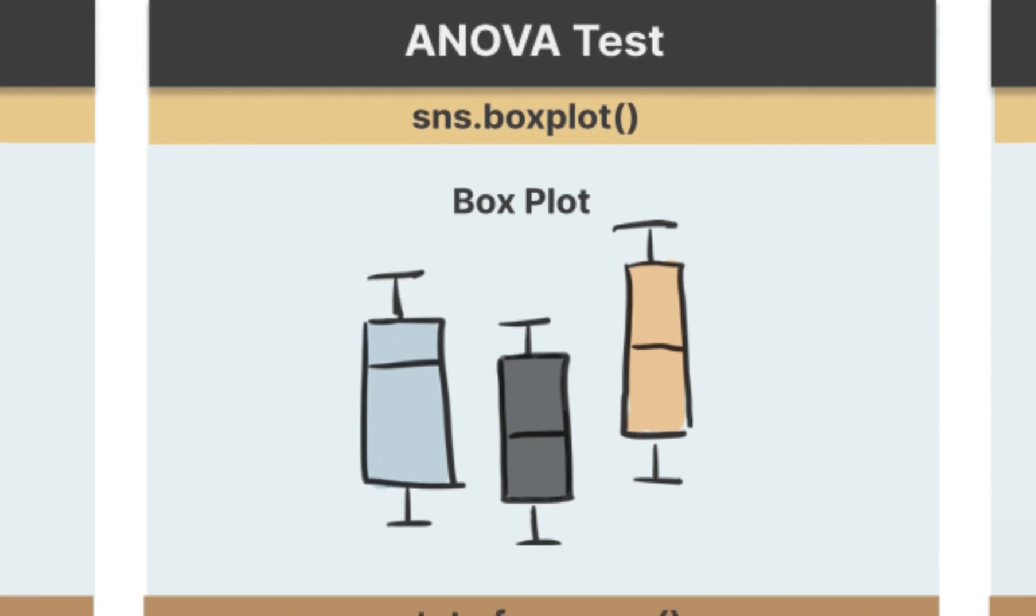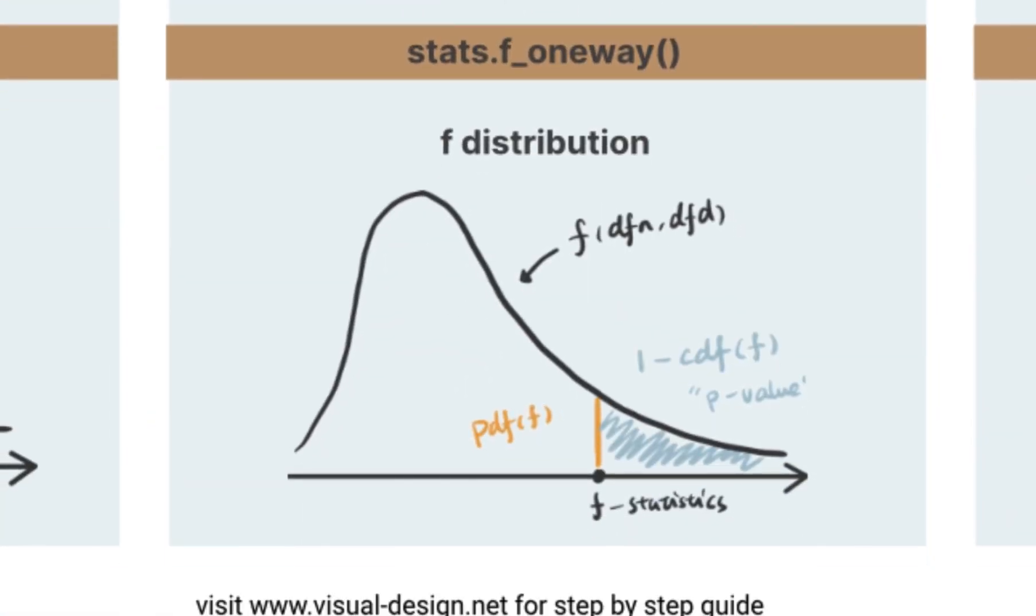ANOVA test also follows f-distribution that is defined by degrees of freedom. The degrees of freedom is calculated by number of total samples, n, and the number of groups, k. To calculate the p-value of the f-statistics, we use the right-tail cumulative area of the f-distribution, which is 1 minus cumulative density of the f-statistics.